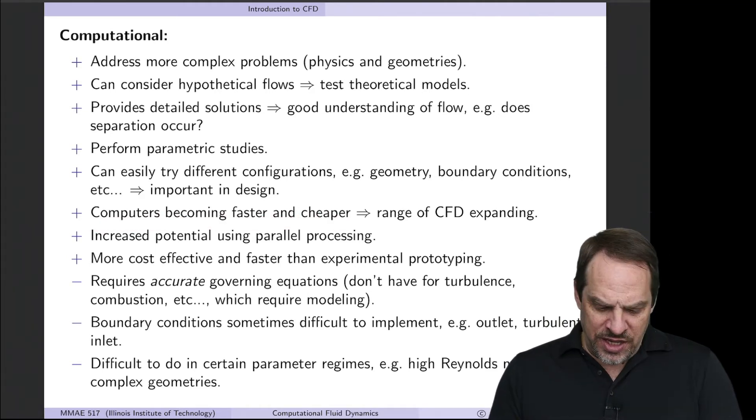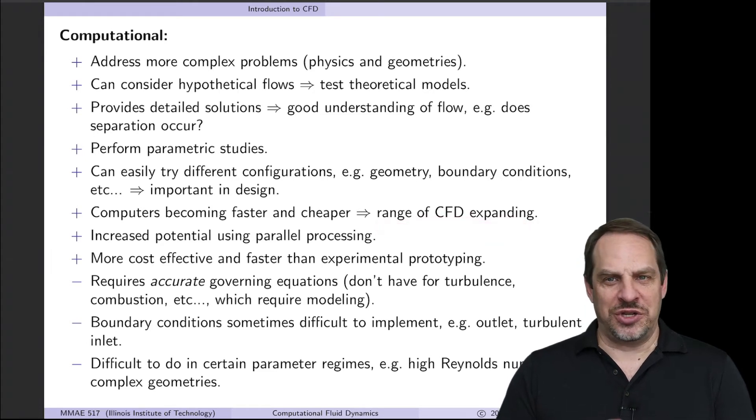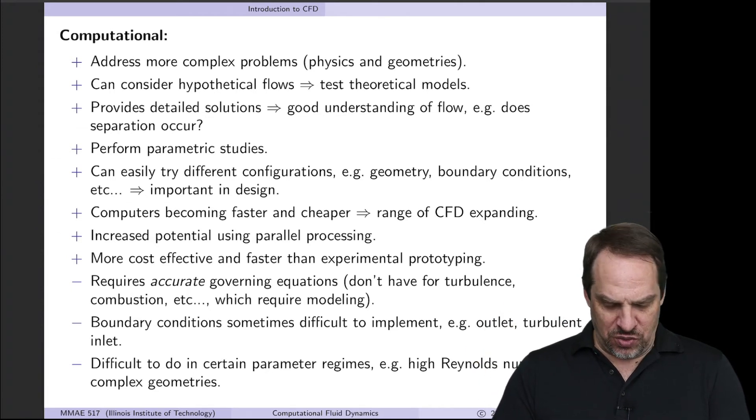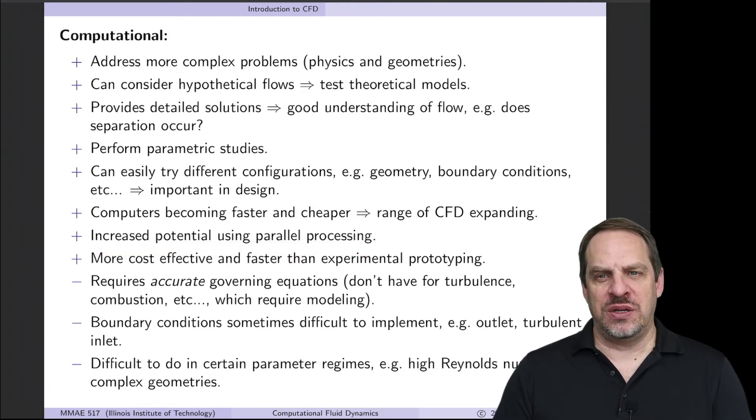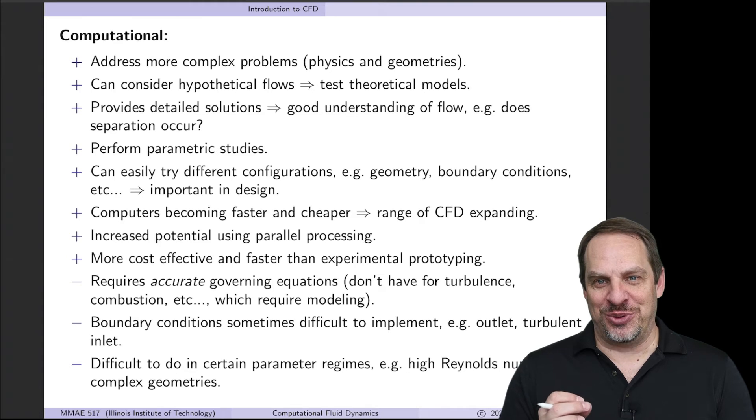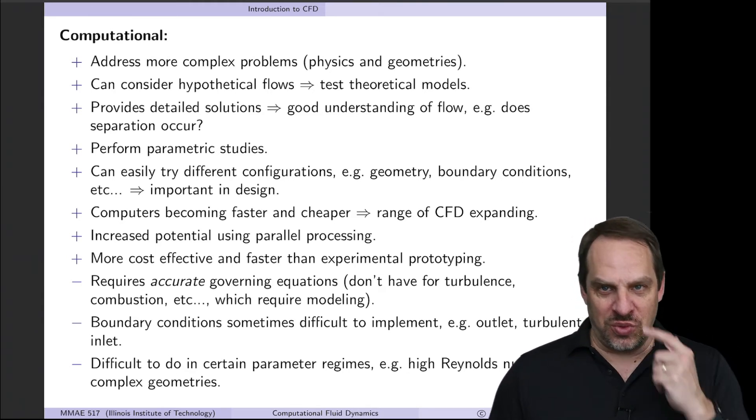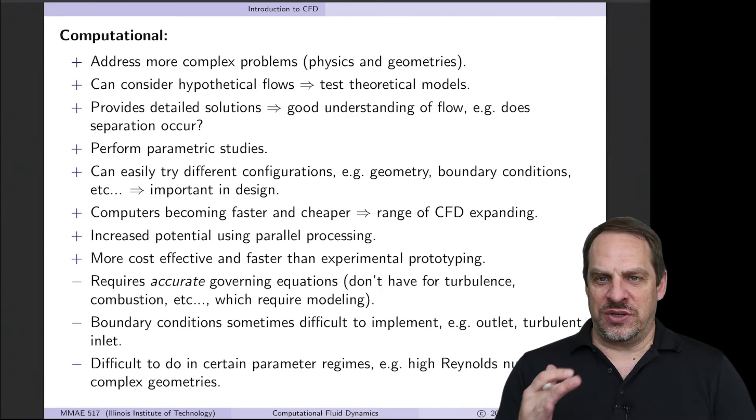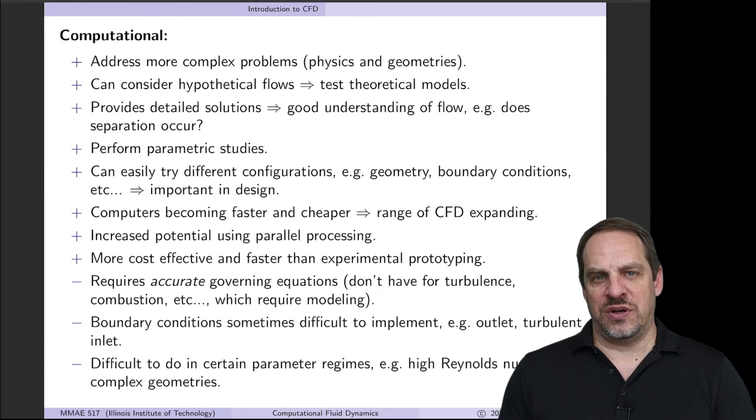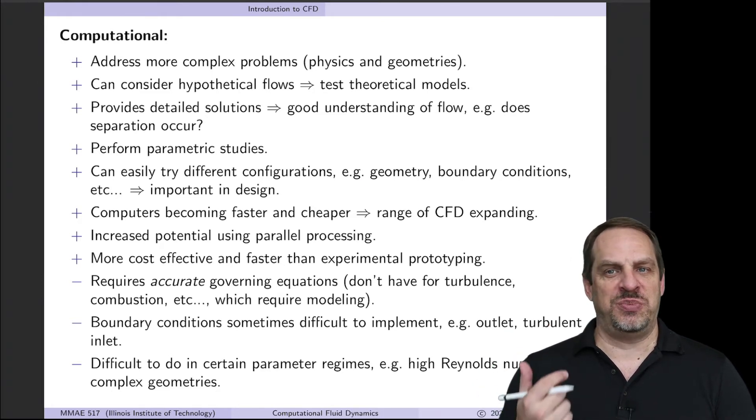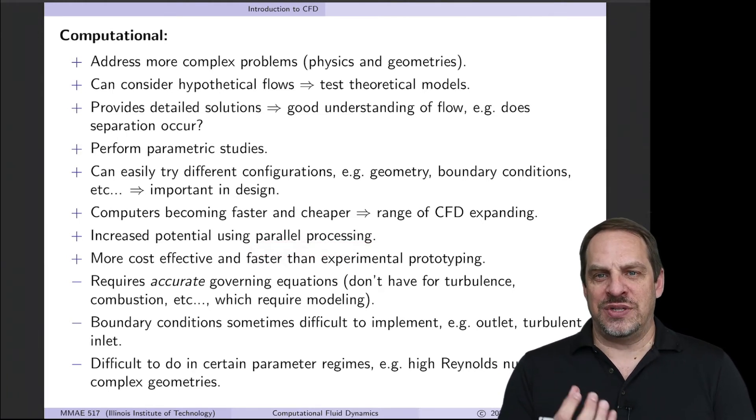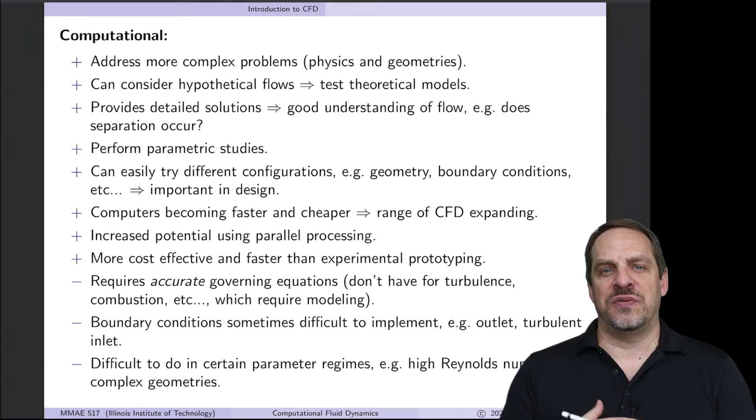Computers are becoming faster and cheaper, and so the range of CFD is always expanding. You can take the same code, don't change a thing, run it on a faster computer, and you get your results more quickly, or you can run bigger problems. Along with that, there's increased potential using parallel processing. Nowadays, pretty much everything has multiple cores. Even my Apple Watch has multiple cores in it. So parallel processing is inherent in most computers today. And if you look at supercomputers, they have often up to millions of processing units, whether that's CPUs and or GPUs and cores. So parallel computing, parallel processing, gives us another avenue to take advantage of the hardware that's available to us to solve even bigger problems.